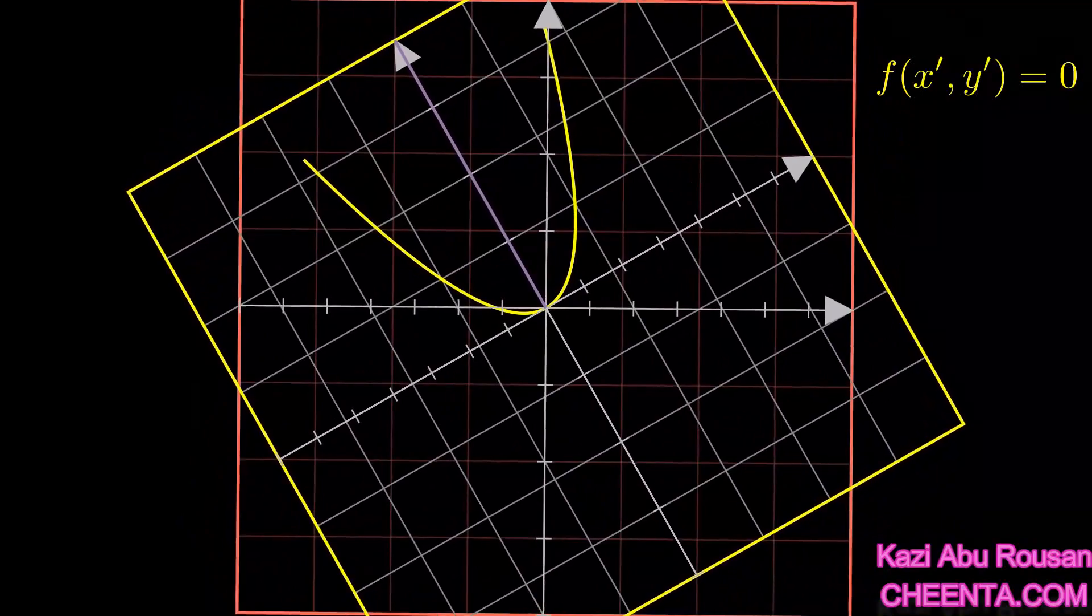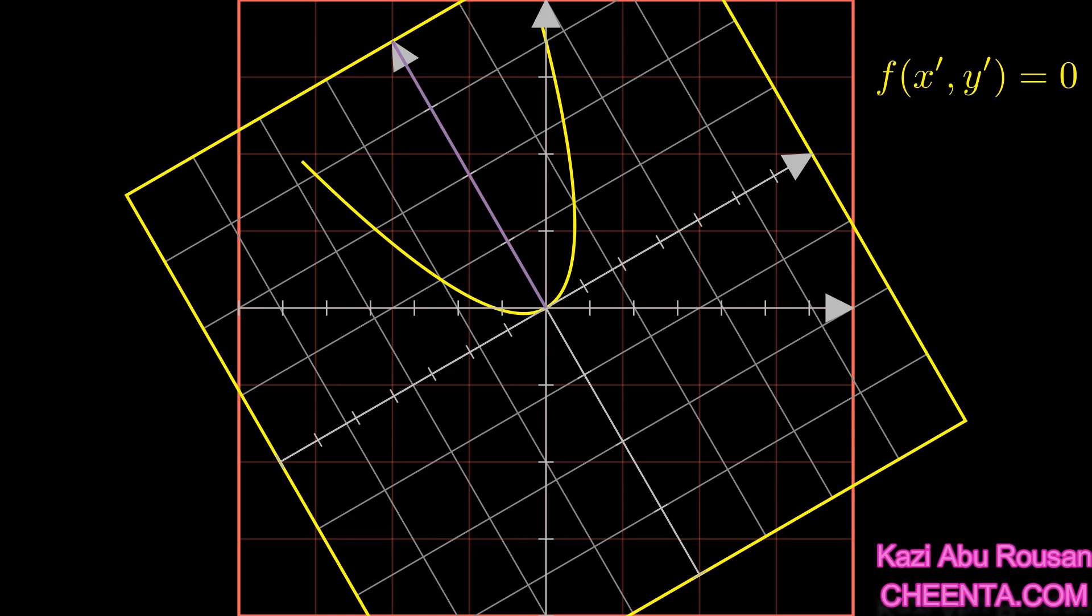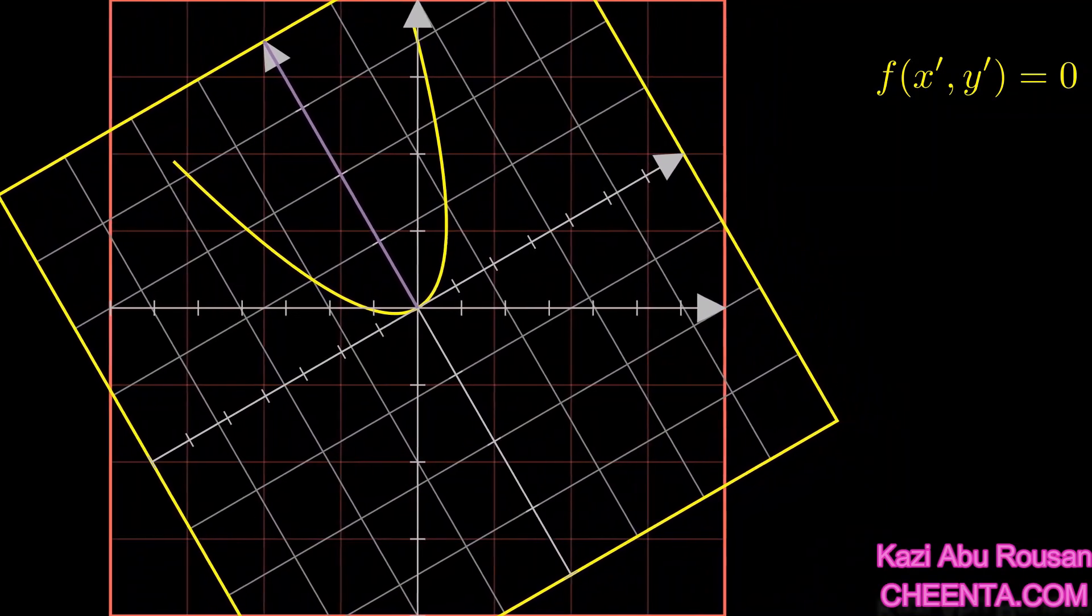From the red frame's point of view, I can write down the relation between the x and y of the red plane with the x and y of the yellow plane. These equations relate the coordinates of the yellow plane with the coordinates of the red plane.